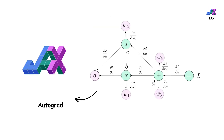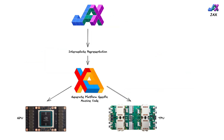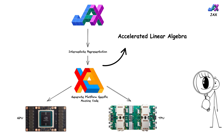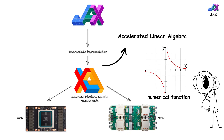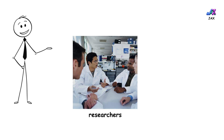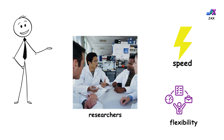JAX combines Autograd for Automatic Differentiation and XLA, Accelerated Linear Algebra, to enable researchers to express complex transformations of numerical functions. It's particularly popular among researchers working on advanced models who need speed and flexibility.